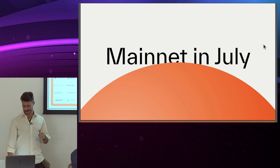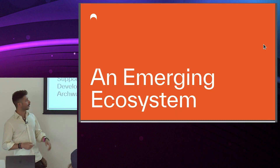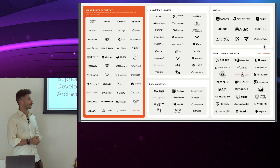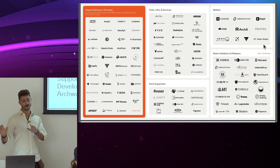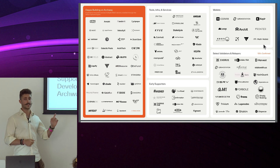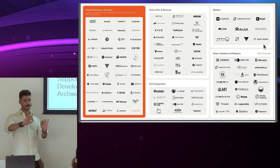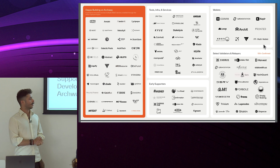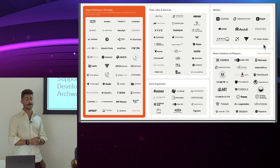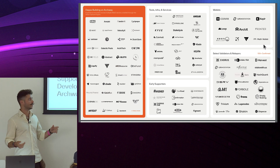As a developer you can leverage Archway's tooling: the core daemon, and the developer CLI, which is designed to be a streamlined way to deploy smart contracts and interact with the modules — including the rewards module and gas tracking module. There is also ongoing work to revamp the developer experience. Arch3.js is a wrapper around CosmJS that also lets you interact with Archway's modules using JavaScript.